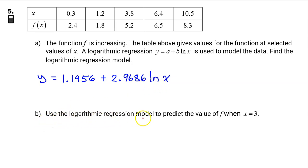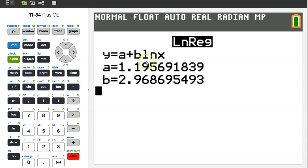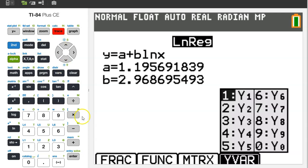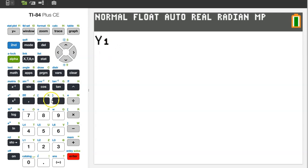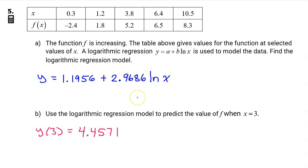Part B: Use the logarithmic regression model to predict the value of f when x is 3. So we need to find the value of y at 3. But we do not want to use this rounded version of the model. We want to use a version that has all of the decimals still intact. Because we had the calculator store the regression model as y1, we can use y1 to evaluate y at 3. Just hit alpha, trace, ENTER, and it pulls up y1. To evaluate y1 at 3, just use parentheses like this, and hit ENTER. So that's the answer. Let's record four decimal places, 4.4571. So that's it for number five.